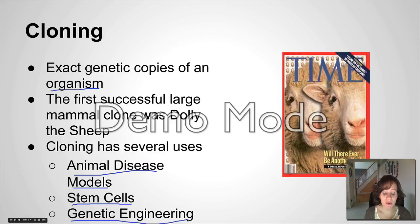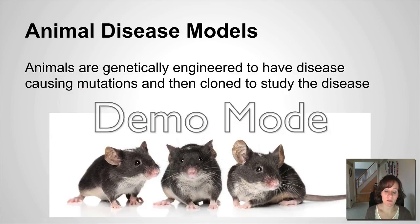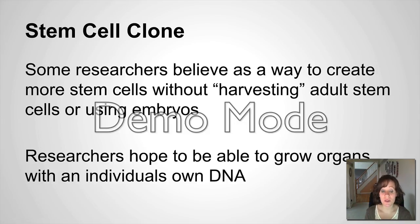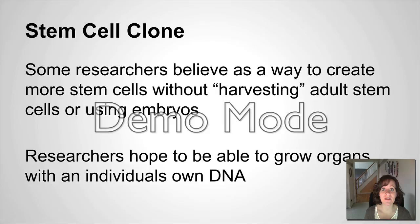Cloning can also be used in genetic engineering. Animals can be genetically engineered to have disease-causing mutations and then cloned for study. Some researchers are looking to create more stem cells from a person's own body without using embryos, and they hope to even grow whole organs — for example, a pancreas — from somebody's own stem cells. If someone has type 1 diabetes, they could take their own DNA, clone their own stem cells, and possibly grow their own organ.